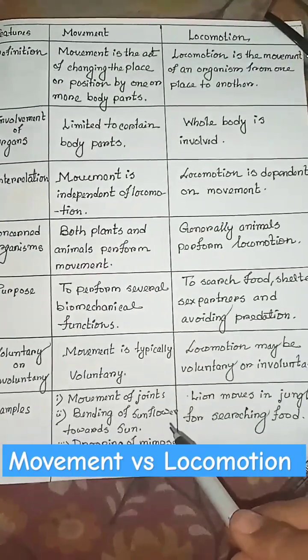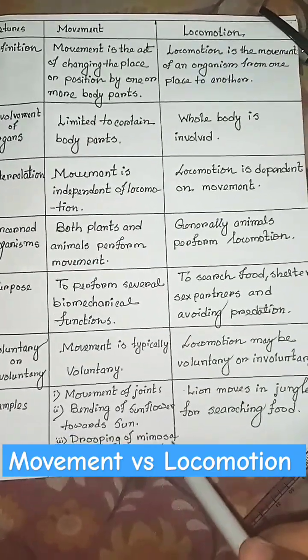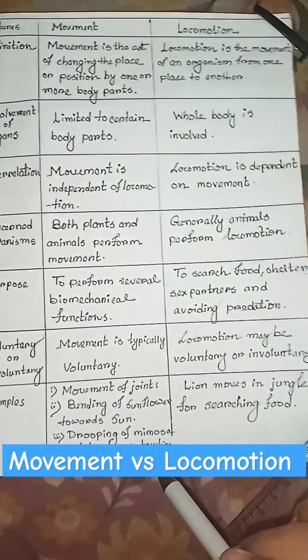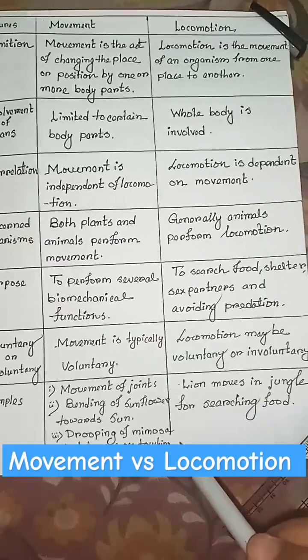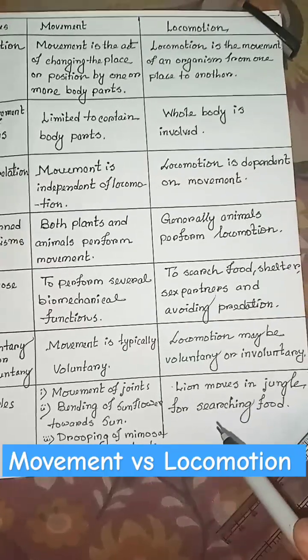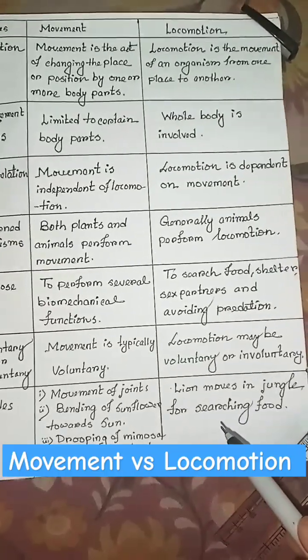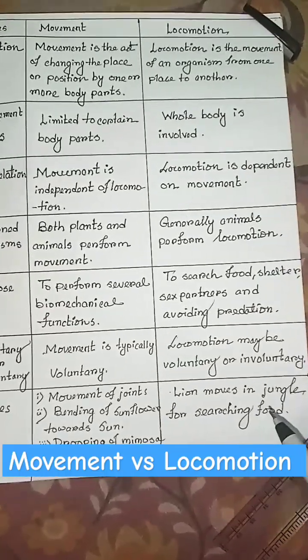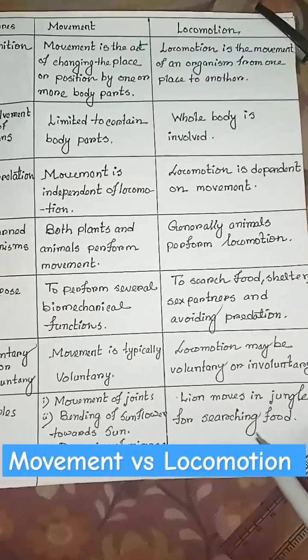Examples of movement: movement of joints, bending of a sunflower towards the sun, drooping of mimosa plant leaves on touching. Example of locomotion: a lion moves in the jungle to search for food.